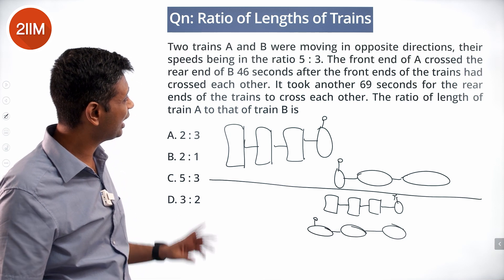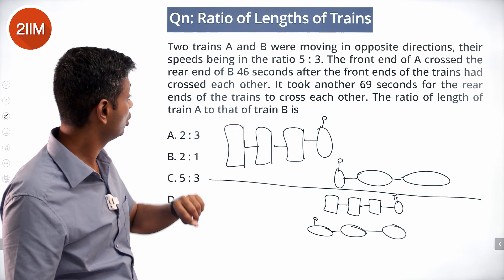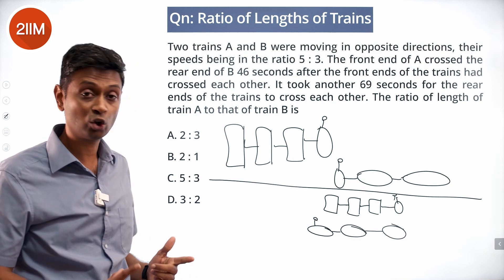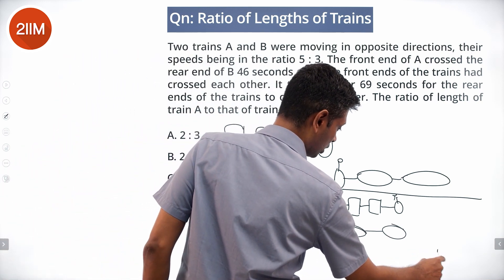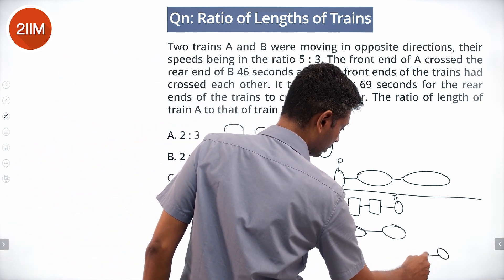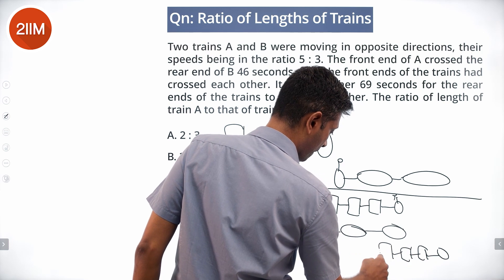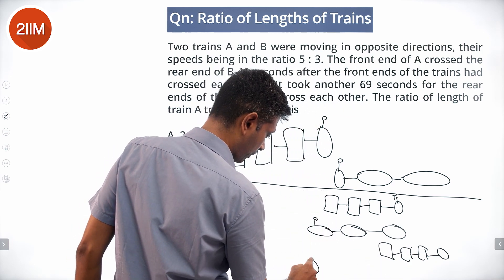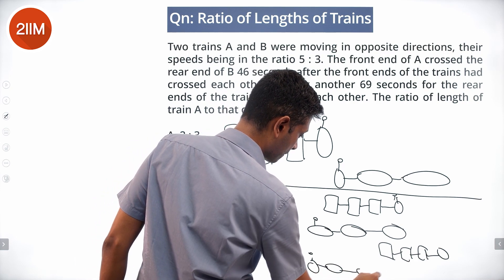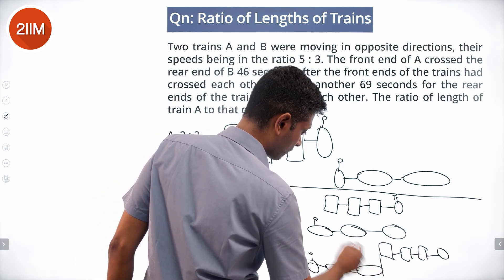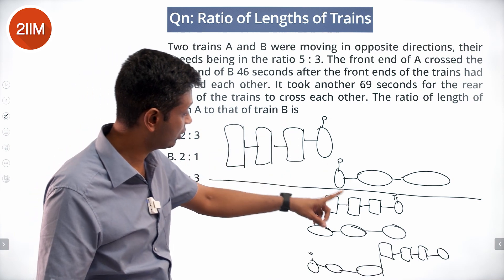This first phase takes 46 seconds. It took another 69 seconds for the rear end of the trains to cross each other — going from this state to this state.